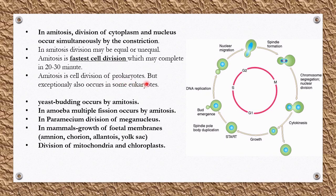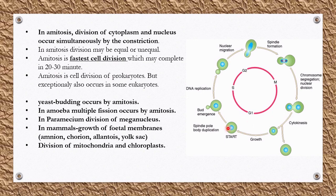Amitosis is generally the cell division of prokaryotes, but it exceptionally also occurs in some eukaryotes — particularly unicellular organisms like yeast. An example is yeast budding, which occurs by amitosis. During budding: bud formation occurs, DNA replication occurs, nuclear migration occurs, and nuclear content is transferred to the new bud cell.